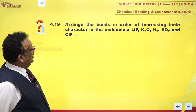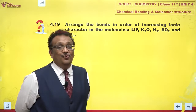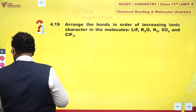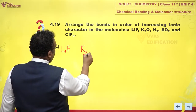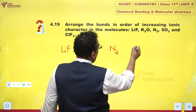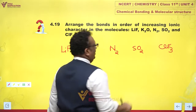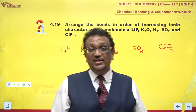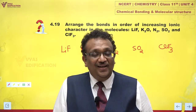The question says to arrange the bonds in increasing ionic character in the molecules. We have LiF, K₂O, N₂, SO₂, and ClF₃. There are 5 molecules and we are supposed to arrange them in the increasing order of ionic character.